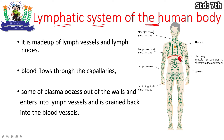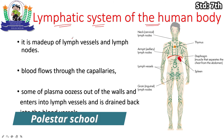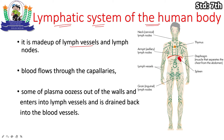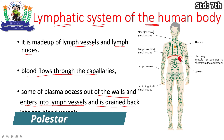Now let's discuss the lymphatic system of the human body. The lymphatic system is connected to blood and is related to lymph nodes. Fluid from the walls of blood vessels enters into lymphatic vessels and is drained back into the blood vessels.